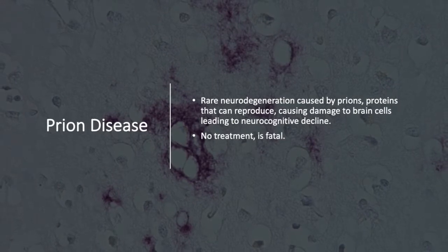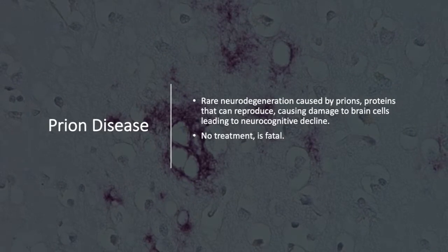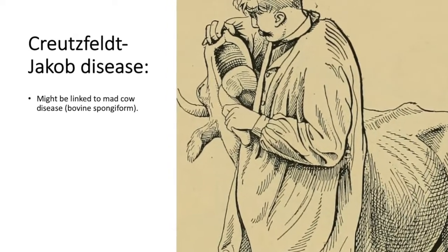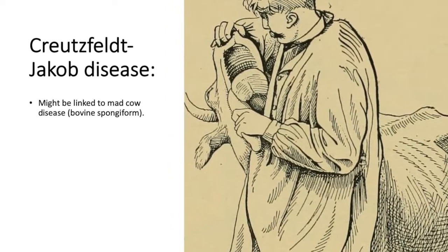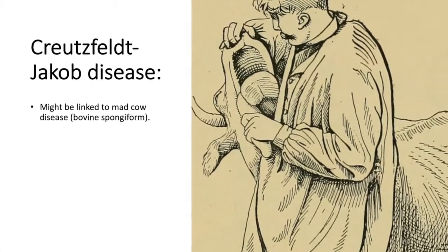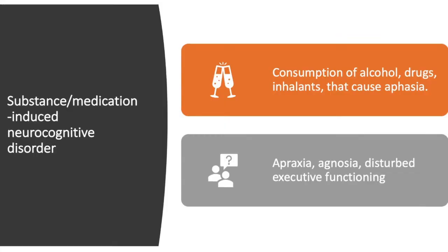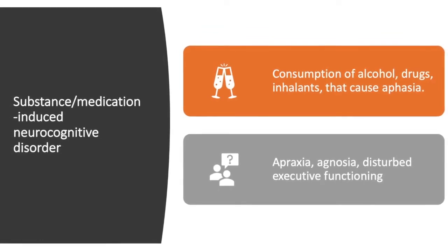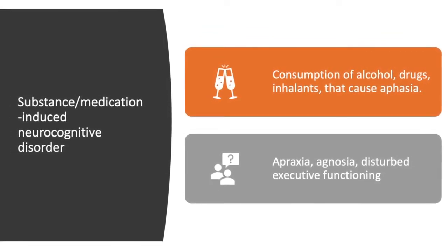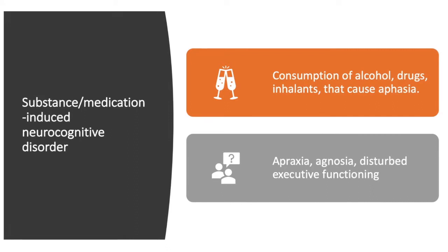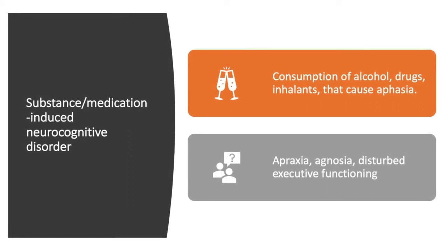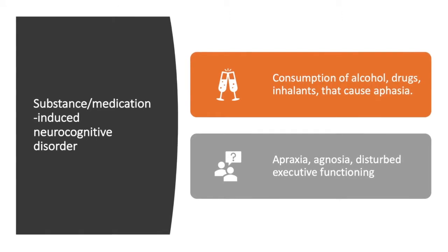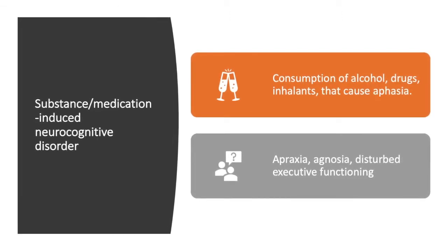There is no treatment for prion disease; it is fatal. Creutzfeldt-Jakob disease may be linked to mad cow disease, or bovine spongiform encephalopathy. Finally, there is substance or medication-induced neurocognitive disorder, which occurs from the consumption of alcohol, drugs, or inhalants that bring about aphasia, apraxia, and agnosia, thus disturbing one's executive functioning.